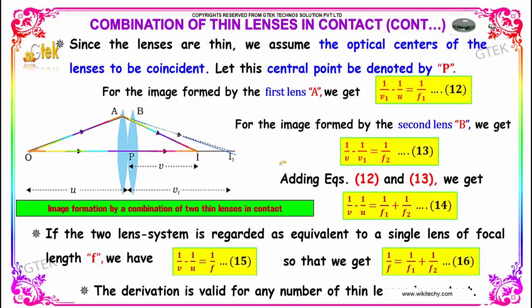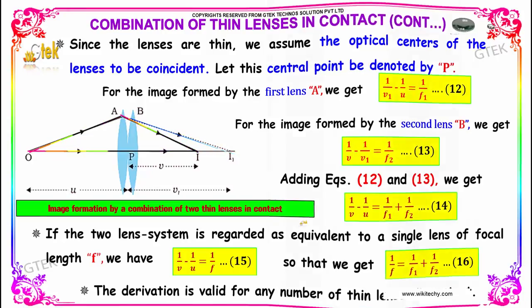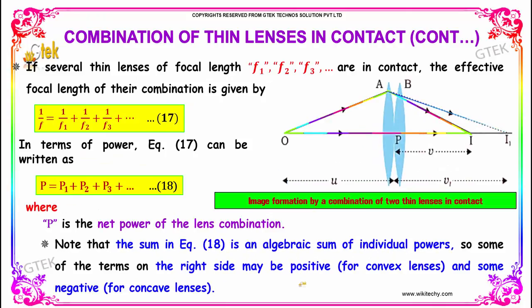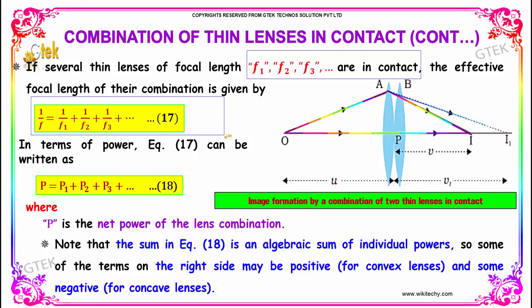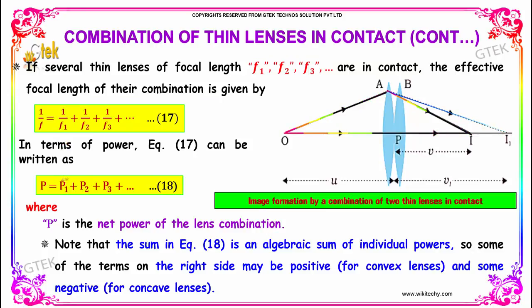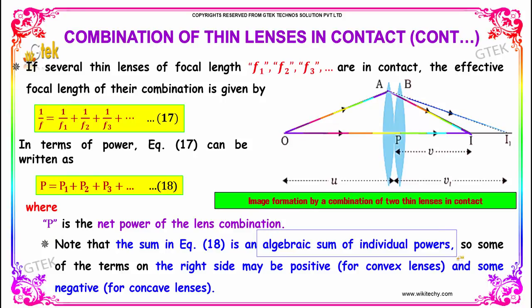This derivation is valid for any number of thin lenses in contact. If several thin lenses of focal length F1, F2, F3, and so on are in contact, the effective focal length of their combination is given by 1/F = 1/F1 + 1/F2 + 1/F3 + ..., marked as equation 17. In terms of power, this is written as P = P1 + P2 + P3 + ..., where P is the net power of the lens combination. This sum is an algebraic sum of individual powers.